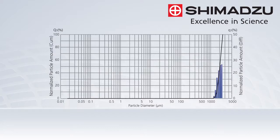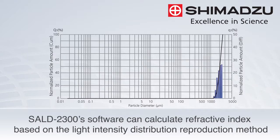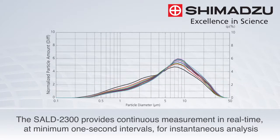Across this measurement range, the SALD2300 software can automatically calculate an appropriate refractive index based on the light intensity distribution reproduction method — the world's first software to perform this calculation. The SALD2300 provides continuous measurement in real time at minimum one-second intervals for instantaneous analysis.